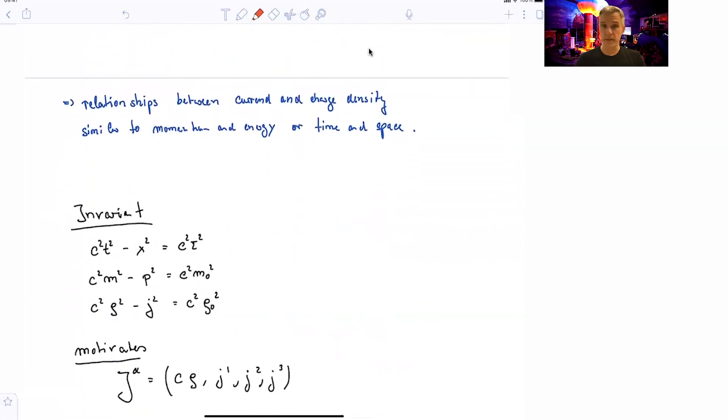So we can, motivated by this, write a four vector, which has as the first component c times the density, and as the second, and third component, the current.